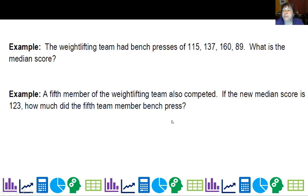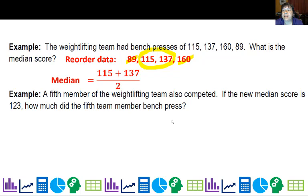Let's look at an example. The weightlifting team had bench presses of 115, 137, 160, and 89. What is the median score? Put them in order and then take them off equally from each end. I have two data points in the center, which means I have to take the average of them. So I'm going to average those two and I get 126, which would be halfway between 115 and 137.